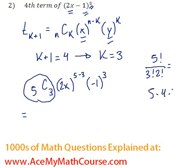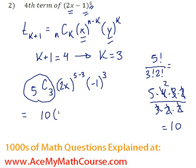So 5 times 4 times 3 times 2, all over 3 times 2 times 2, these guys are going to cancel out. 5 times 2 is 10, so 10 times 2x squared minus 1 cubed.